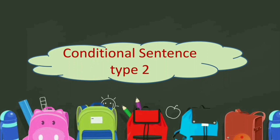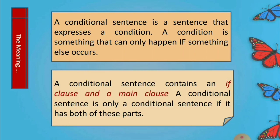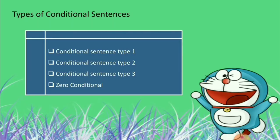Ini adalah pengertian dari conditional sentence yang sudah dijelaskan minggu lalu, yaitu conditional sentence itu terdiri dari dua klausa: yang pertama adalah if clause dan yang kedua adalah main clause. Kalimat pengandaian atau conditional sentence itu adalah kalimat berandai-andai yang terdiri dari empat jenis: Type 1, Type 2, Type 3, dan Zero Conditional. Dimana nanti kalimat pengandaianmu itu bisa tercapai, tidak bisa tercapai, atau mustahil tidak bisa tercapai.